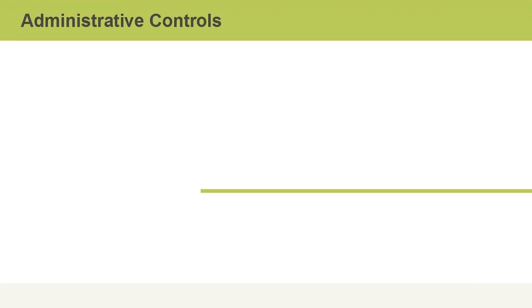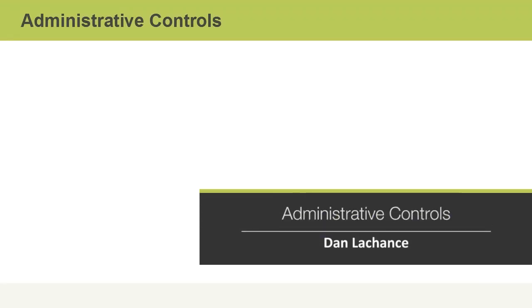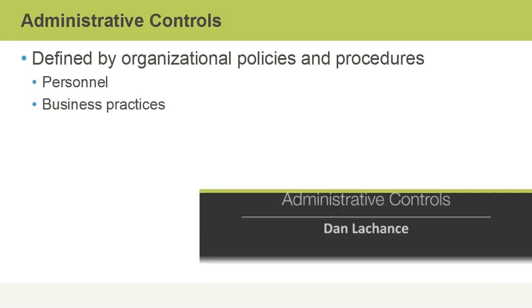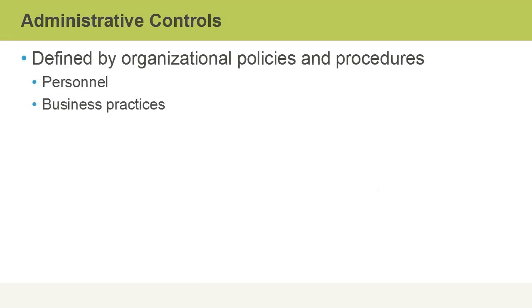In this video, we'll discuss administrative controls. Administrative security controls are defined by organizational policies and procedures, which could be influenced by laws and regulations or business contracts.